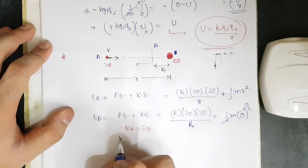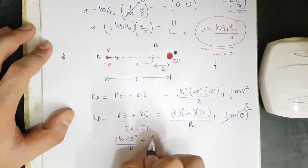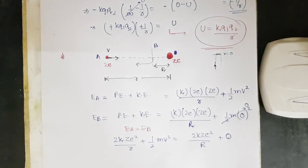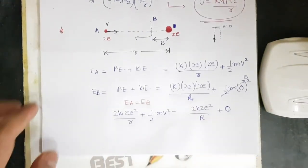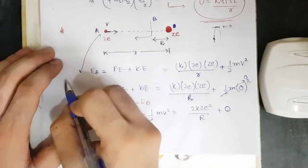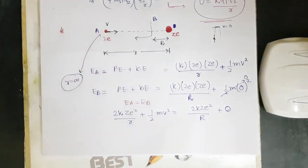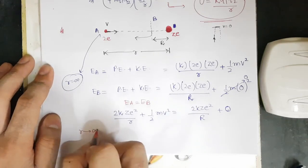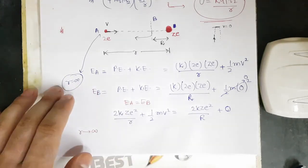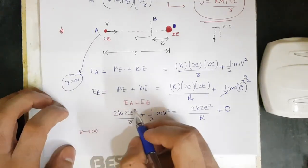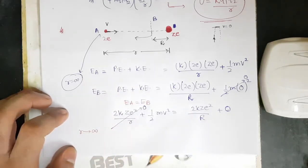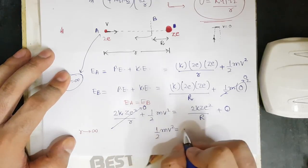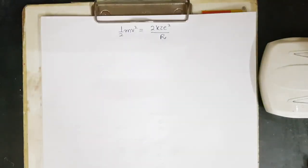So the energy equation becomes: 2kZe² over r plus half mv² equals 2kZe² over R. Now we make an important assumption: the alpha particle is thrown from r equal to infinity. When r tends to infinity, the term 2kZe²/r becomes zero — since a constant divided by infinity is zero. This simplifies the equation to: half mv² = 2kZe² over R.